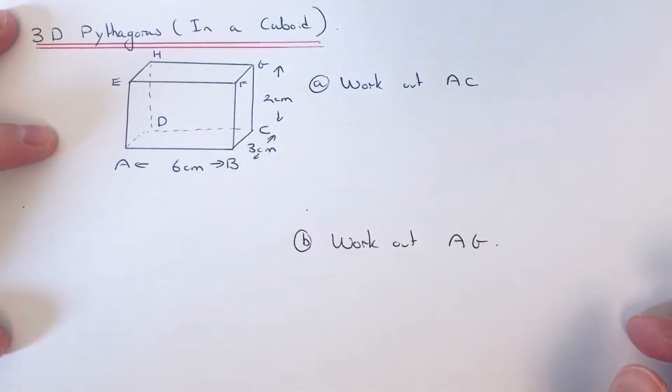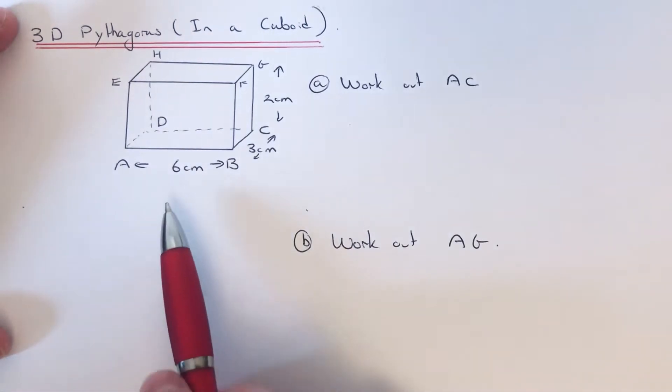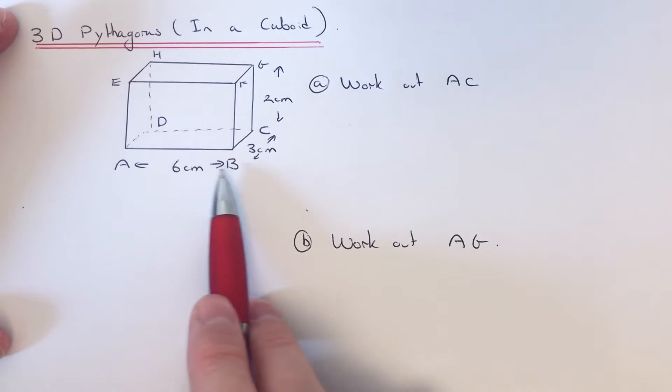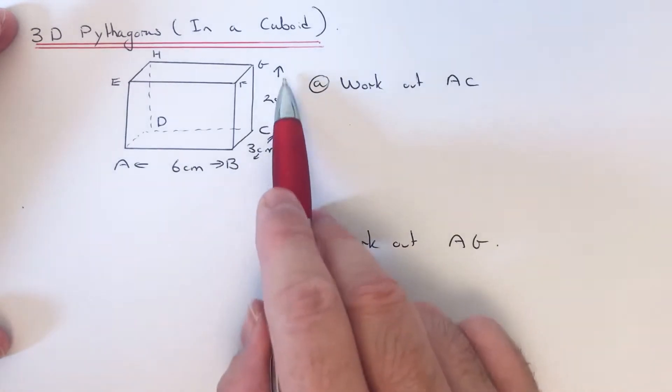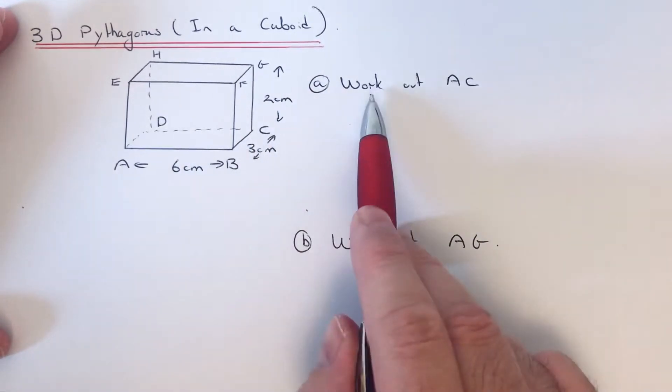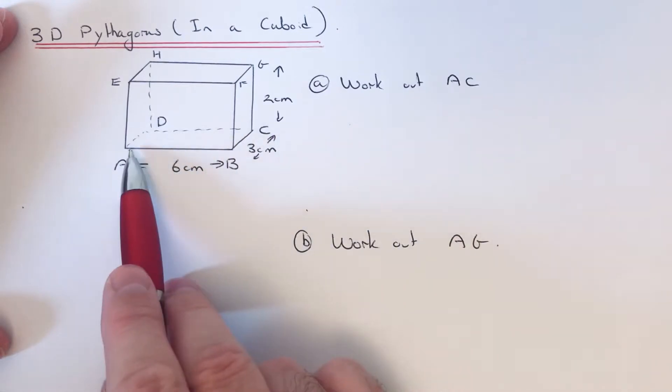Hi guys, welcome back. This is Maths 3000. Today I'm going to show you how to carry out 3D Pythagoras in a cuboid. So let's have a look at the cuboid which we have here. We've got a cuboid which is 6 by 3 by 2, and our first question is to work out the side length A to C.